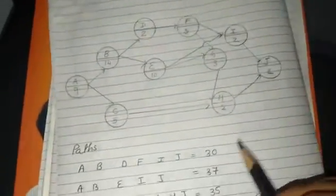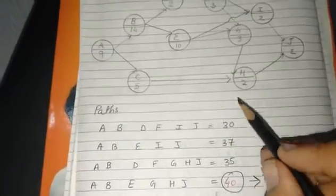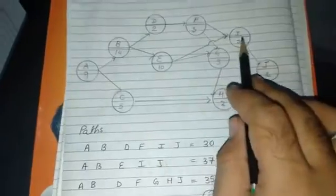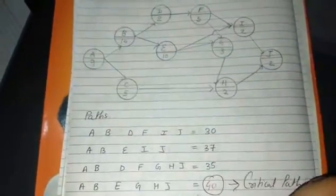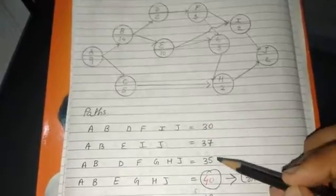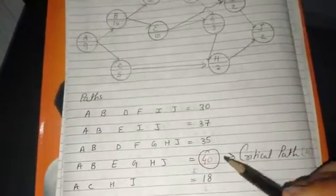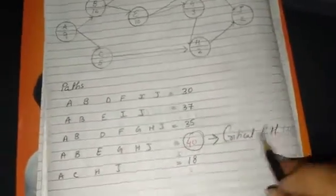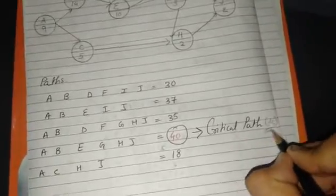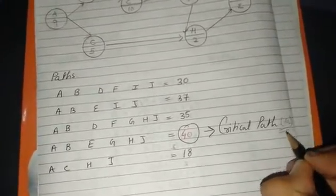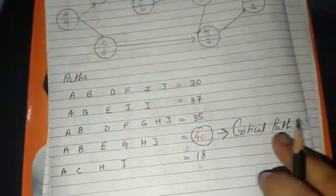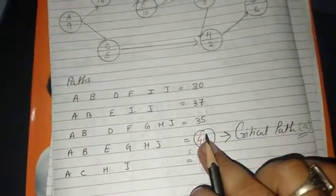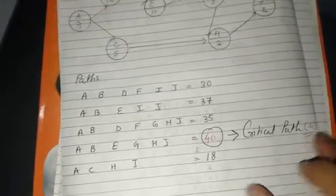After that we will find out critical path. All the paths like A-B-D-F-I-J, similarly all possible paths will be seen and the time would be added. The maximum time would become our critical path, and that will also become our μ. Remember this critical path time would be considered as μ for our Z-score.